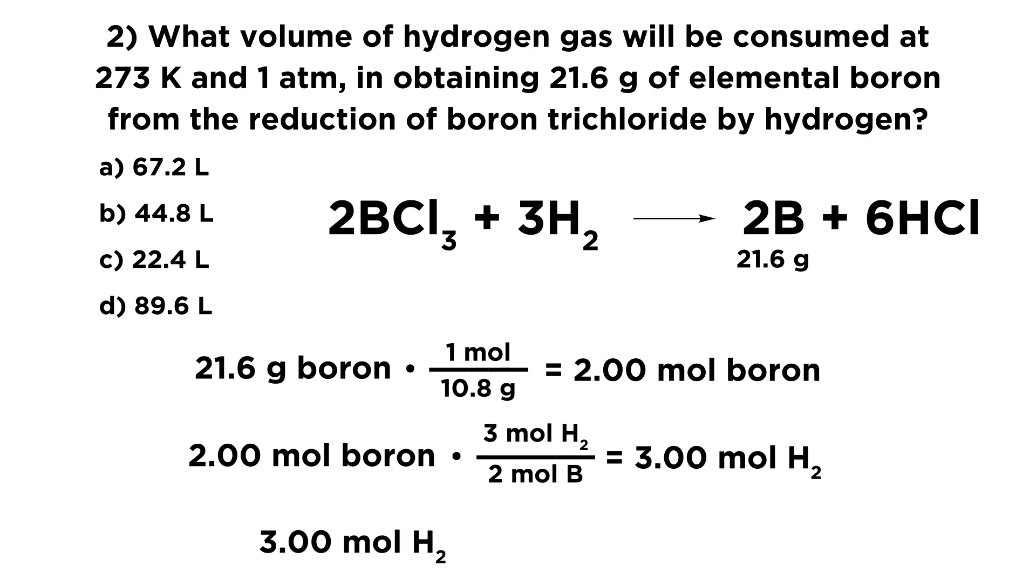Now, all we need to do is use this special value. Remember, we don't need to go and do a whole ideal gas law calculation. All we need to do is take 3 moles of hydrogen times 22.4 liters per mole, because we know that any ideal gas will occupy that volume per mole at standard temperature and pressure, which is what we have.